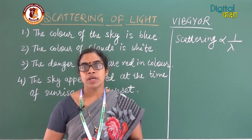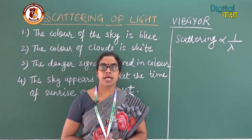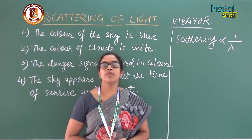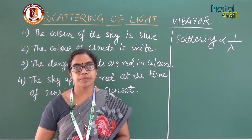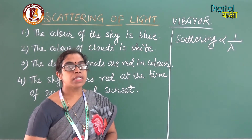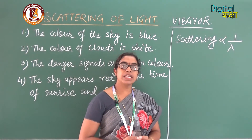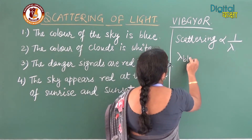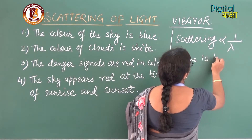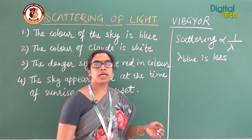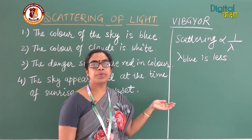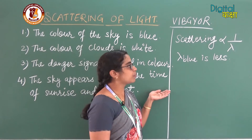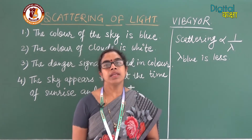The scattering phenomena is inversely proportional to the wavelength of the color. When sunlight travels in the atmosphere, the small particles present in the air act as obstacles for scattering. When sunlight touches these particles, scattering takes place, and since the wavelength of the blue color is less, this color is scattered more compared to other colors. For this reason, the color of the sky is seen as blue.